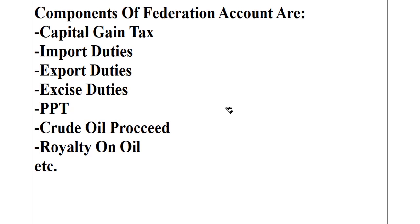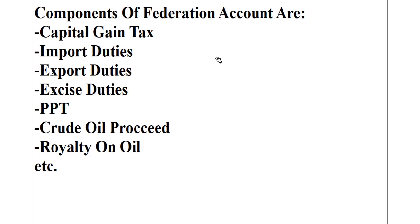When a question tells you to prepare federation accounts, all these items will be given to you one after the other in the question paper: capital gain tax, import duties, export duties, excise duties, petroleum profit tax, crude oil sales, and royalty on oil. What you have to do is assemble all these items, and the figures will be given to you. Total the amounts, and whatever figure you get is the federation account. It's a very simple account.